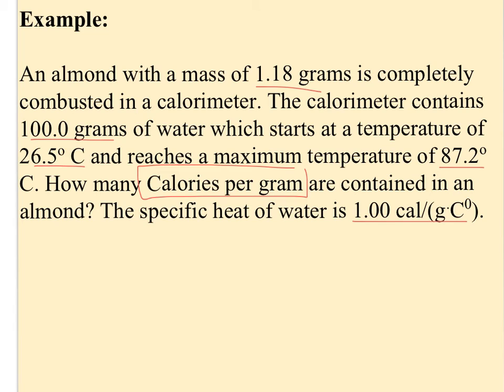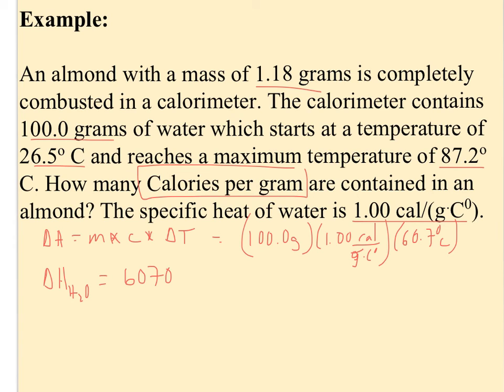Again, I'm going to use the same basic idea that ΔH is equal for both the water and the almond. I have 100 grams of water. I was given a C value of 1.00 calories per gram Celsius degree. And I have a change in temperature of 87.2 minus 26.5, which is 60.7 degrees, a pretty big swing. If I calculate this, 100 times 1 times 60.7 gives me 6,070 calories. ΔH for my water is 6,070 calories, which should also be ΔH for my almond.